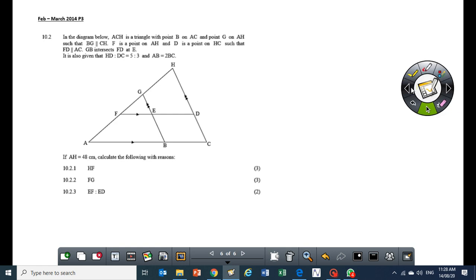Let's highlight some key points here. We have two sets of parallel lines and we also have a ratio there and another ratio there. So we have two sets of parallel lines and two sets of ratios. We are also told that AH is equal to 48 cm, so we need to have the following reasons.